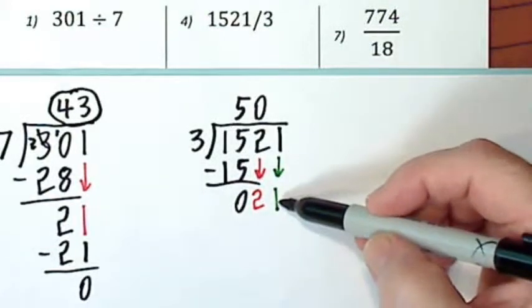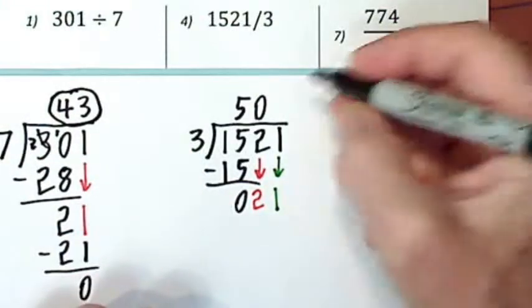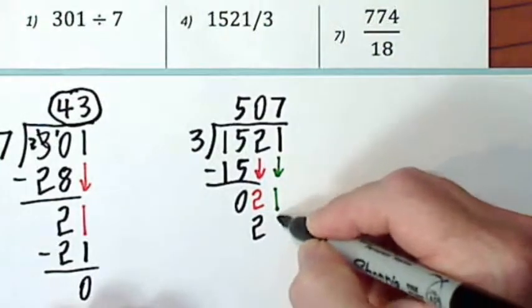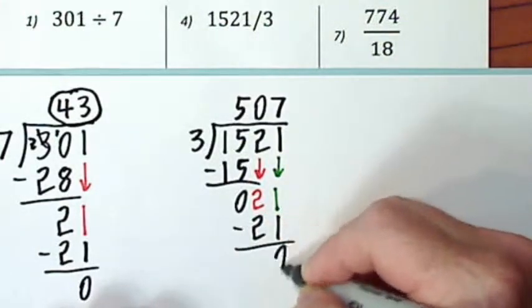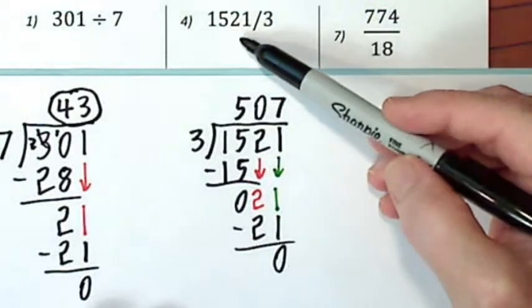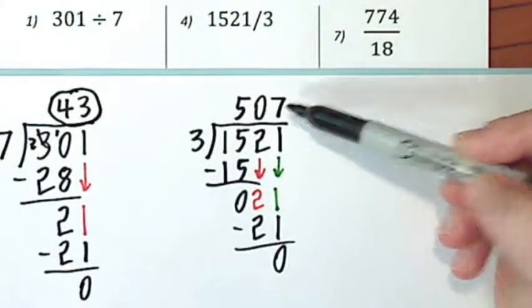So I ask and answer. How many times does three go into twenty-one? Seven times. So the quotient of one thousand five hundred twenty-one and three is five hundred seven.